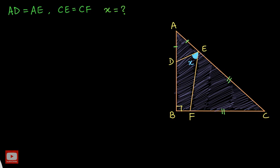First of all, I would like to name angle AED as angle A. If this is A, then angle ADE will also be A because of the property of isosceles triangles — in isosceles triangles, two sides are equal and the two opposite angles are also equal. We are using that property here.